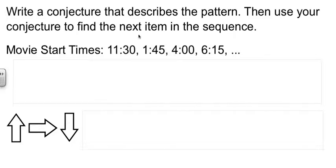So they want us to write a conjecture that describes a pattern, and then they're going to ask us to use our conjecture to find the next item in line. So we have these movie start times, for example. We have the first movie starts at 11:30, then the next one at 1:45, then 4 o'clock, and then 6:15.